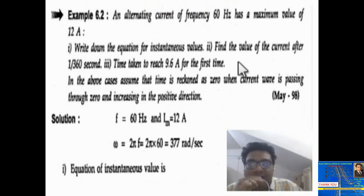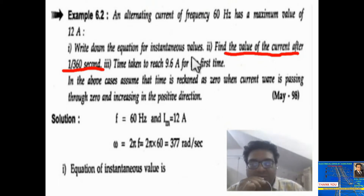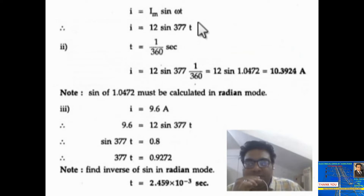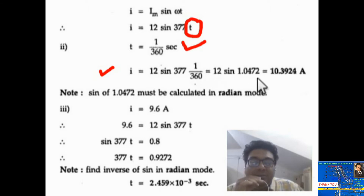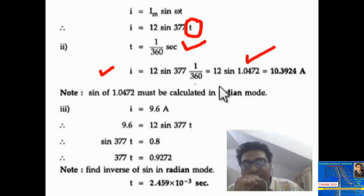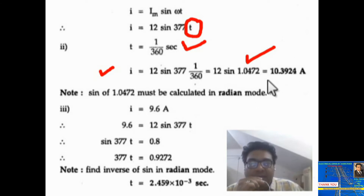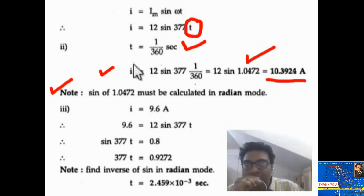The second point: find the value of current after 1/360 second. Put small t equal to 1/360 second into the equation. It becomes 12 sin 377 into 1/360, which gives 12 sin 1.0472 radian. Calculate sin 1.0472 with your calculator in radian mode. The answer is 10.3924 ampere. Note: sin 1.0472 must be calculated in radian mode.